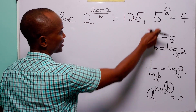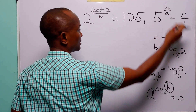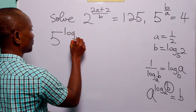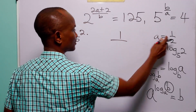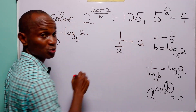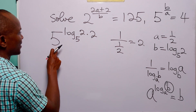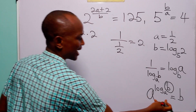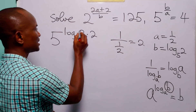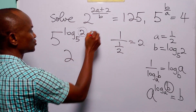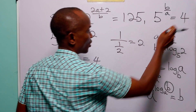Substituting into the second equation, we have 5 to the power (log base 5 of 2) multiplied by 1 over A. Since 1 over (1/2) equals 2, this becomes 5 to the power (log base 5 of 2), multiplied by 2. By the log identity, 5 to the power (log base 5 of 2) equals 2, so this is 2 to the power 2, which equals 4 — exactly what we have on the right-hand side.